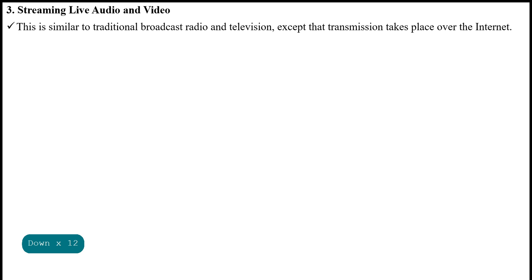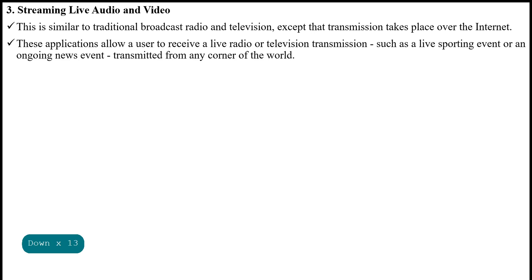The next type is streaming live audio and video. This is similar to traditional broadcast radio and television, except that transmission takes place over the internet. These applications allow a user to receive a live radio or television transmission — such as a live sporting event or an ongoing news event — transmitted from any corner of the world.